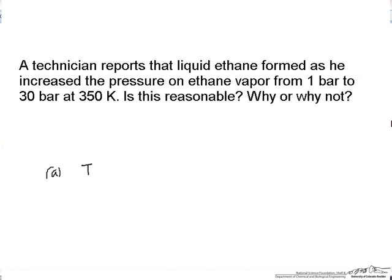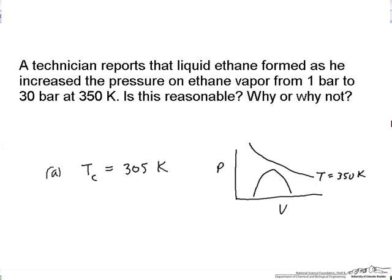To take a look at this, we see that the critical temperature for ethane is 305 Kelvin. And so that means that the temperature of this problem, we're above the critical temperature. And so we would expect an isotherm to look something like this that's shown to the right on the PV diagram.